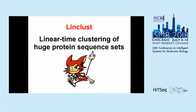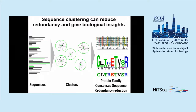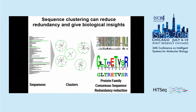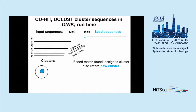The next tool I want to talk about is LinClust, which is a linear time clustering algorithm for huge protein sets. In clustering, you start with a sequence set and want to identify representative sequences, assigning all similar sequences to their representative. This allows you to define protein families, compute consensus sequences, or reduce redundancy. The commonly known algorithms for this are CD-HIT or UCLUST.